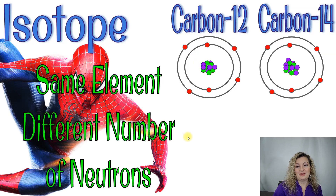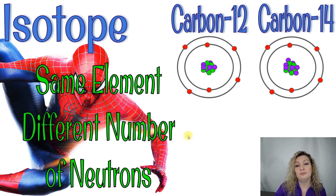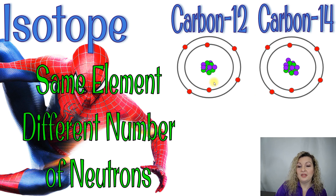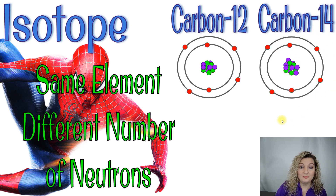An isotope is the same element with a different number of neutrons. So in this case, we have Carbon-12 and Carbon-14. They're still just Carbon, because what makes up an element is the number of protons. The green dots are representing our protons — we have six protons in Carbon-12 and six protons in Carbon-14. So it's still just Carbon, but it's a different isotope of that Carbon.